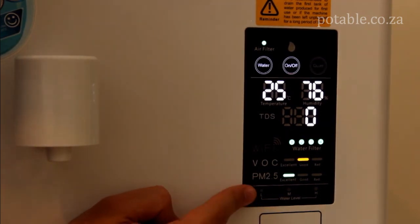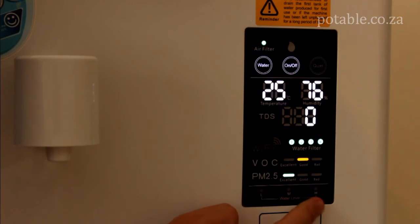And then at the bottom you have the water level in the tank. Obviously if it is on low it means that there is a low water level and then you have medium and high.